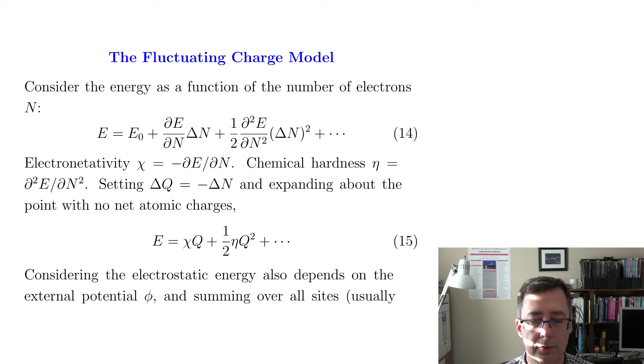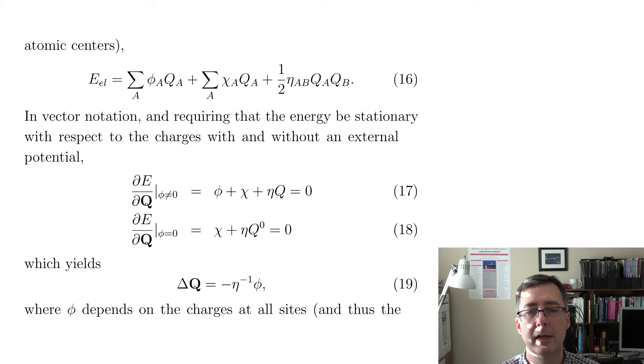Then what you could do is you could say the electrostatic energy only depends on the external potential phi, and then if I sum over all the sites, then I get that the electrostatic energy depends on all the charges in the molecule QA times the electrostatic potential they feel, plus these derivative terms, all the charges QA multiplied by chi A's and electronegativities, and then the product of the charges times these chemical hardnesses.